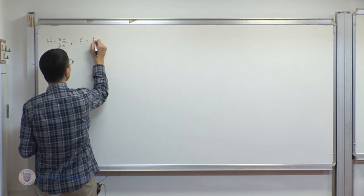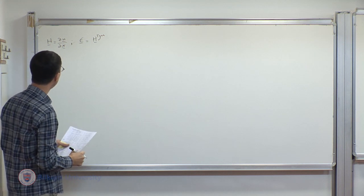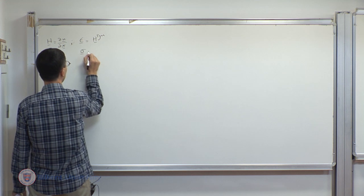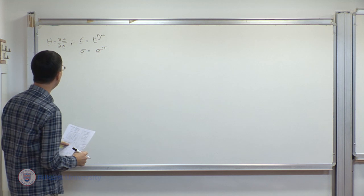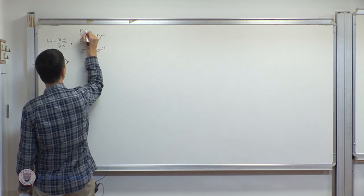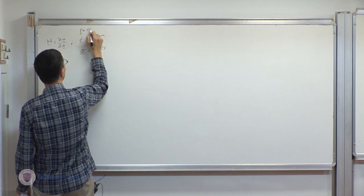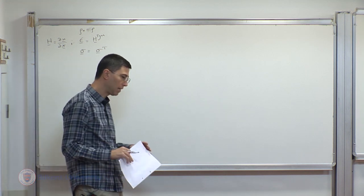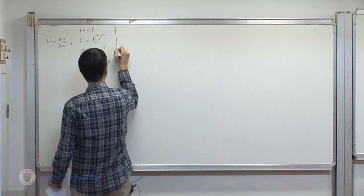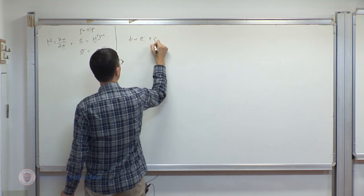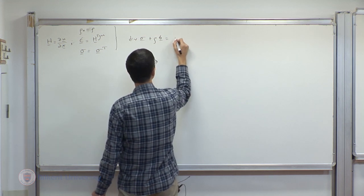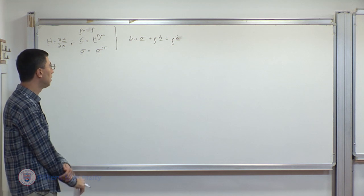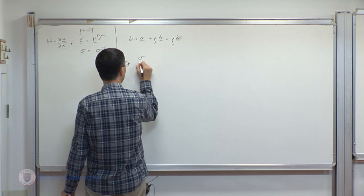In that framework, we have only a single measure of strain, which is defined through the displacement gradient tensor del u over del x. Epsilon becomes the symmetric part of the displacement gradient tensor. There is only one measure of strain in the small deformation framework, and likewise there is only one measure of stress, which inherits the symmetry property of the Cauchy stress tensor.